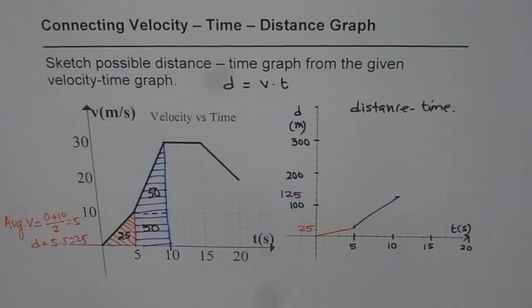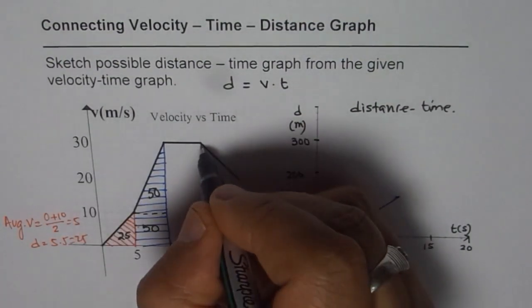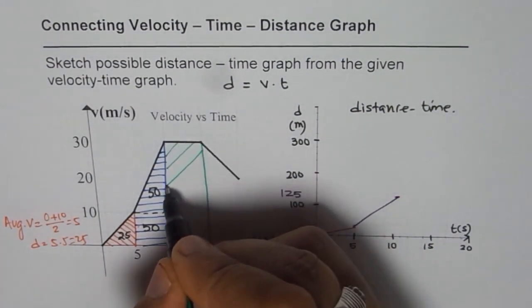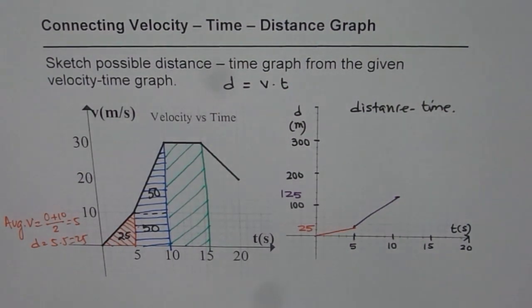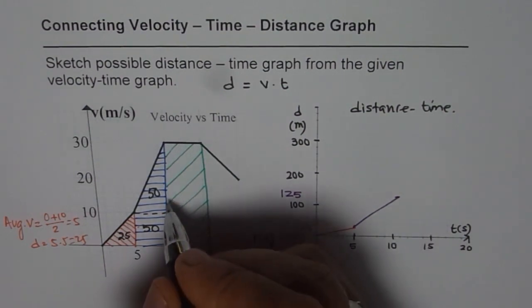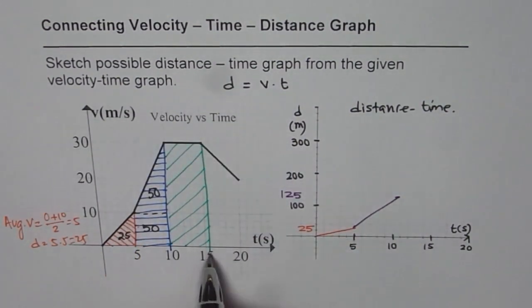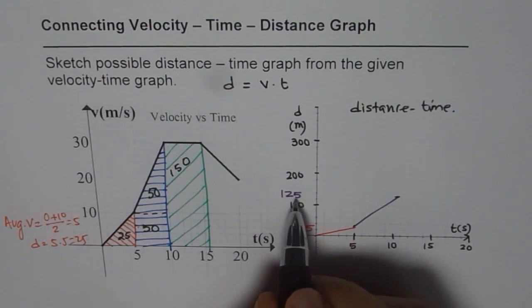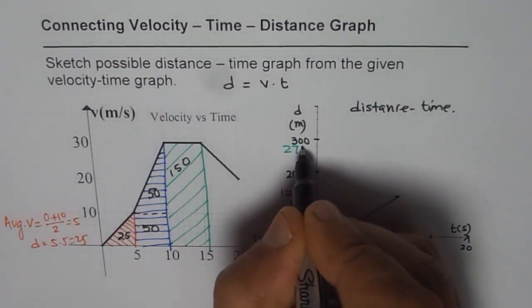So I hope you understand and appreciate how we are translating velocity to distance. And then we have a constant velocity of 30 for 5 seconds. And that gives you 30 times 5, the area of rectangle. So this area of rectangle will be 30 times 5, which is 150. So I have to add 150 to the existing position. So this part is we are moving at a velocity of 30 meters per second for 5 seconds. So that will add 150. So if I add 150 to 125, I get 275.